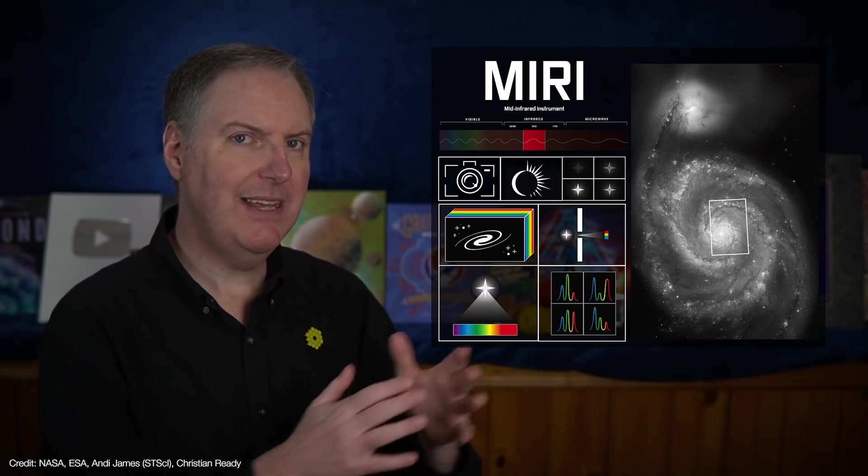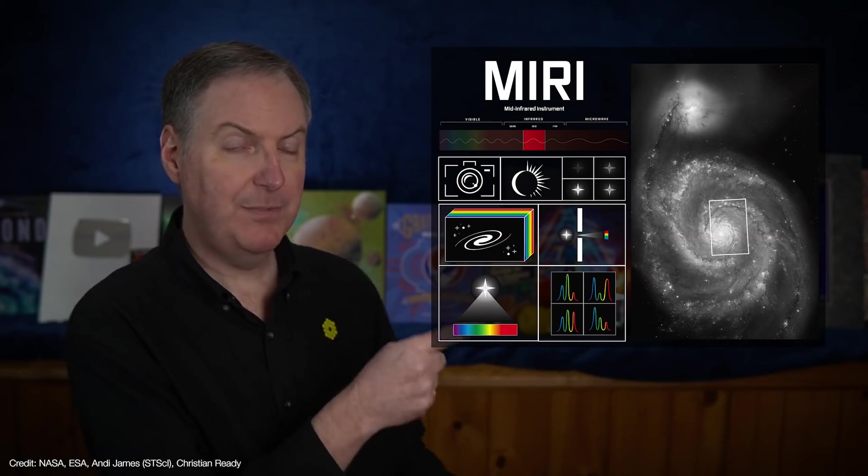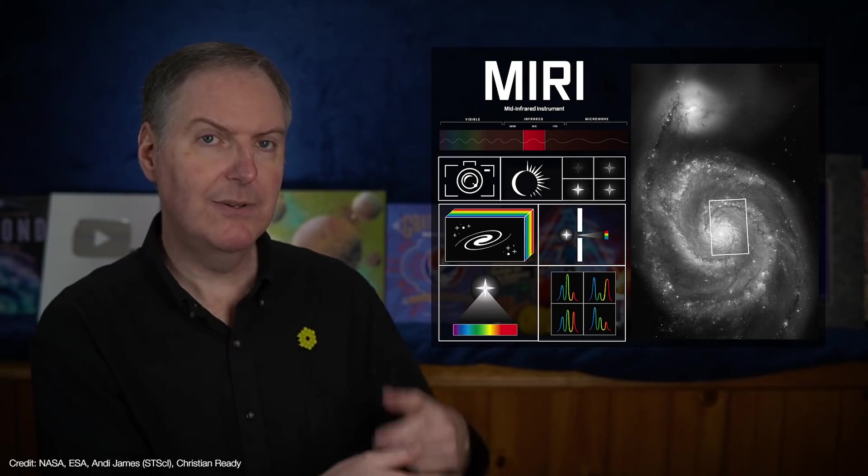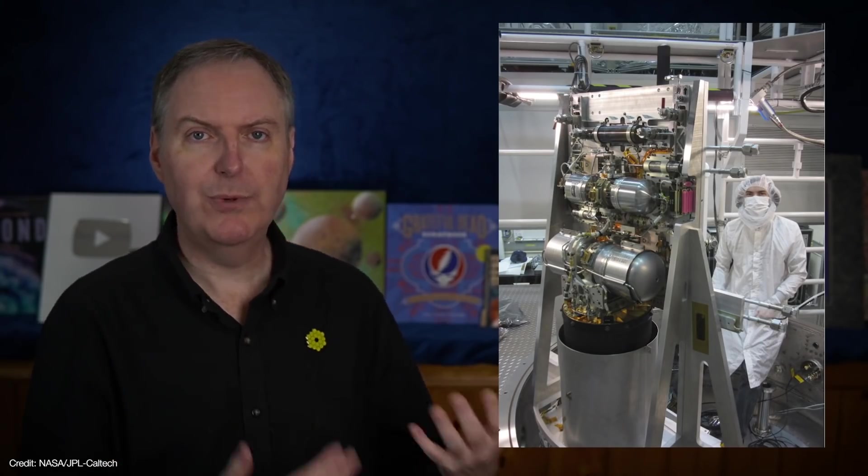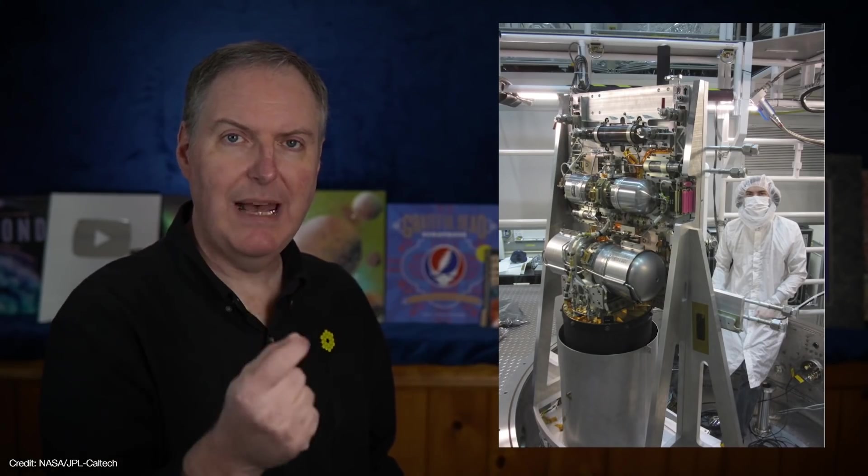But looking deeper into the infrared means that MIRI has to be even colder than its near-infrared siblings. So that's why MIRI uses a cryo-cooler to bring its temperature all the way down to less than seven degrees above absolute zero.